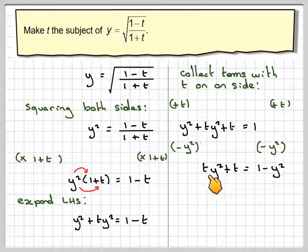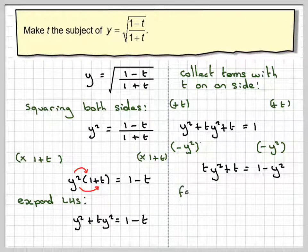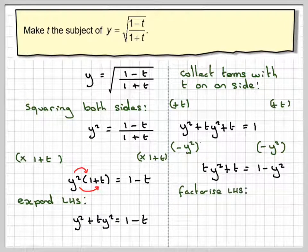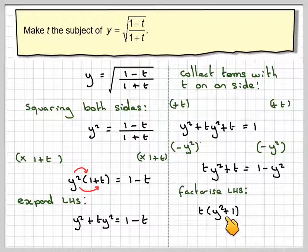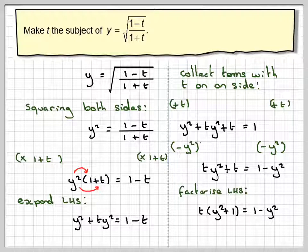Now, because I want to make t the subject, I now factorise out the t from the left-hand side. So we get t brackets y squared plus 1 is equal to 1 minus y squared.